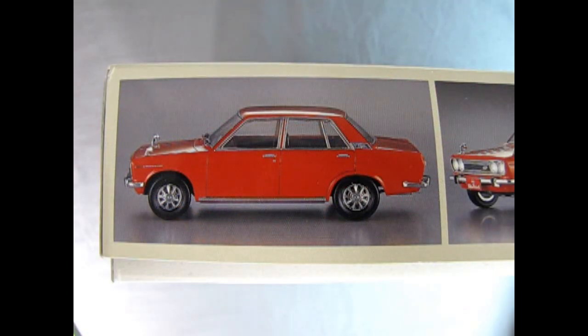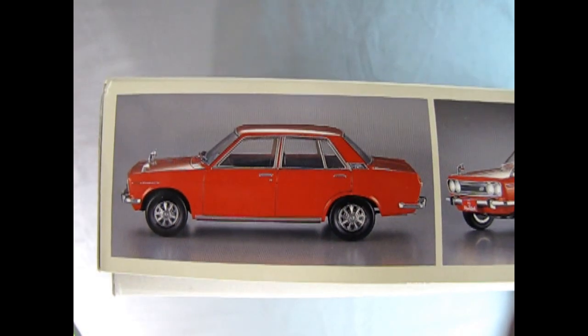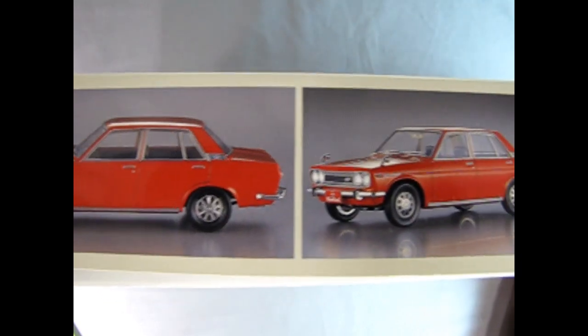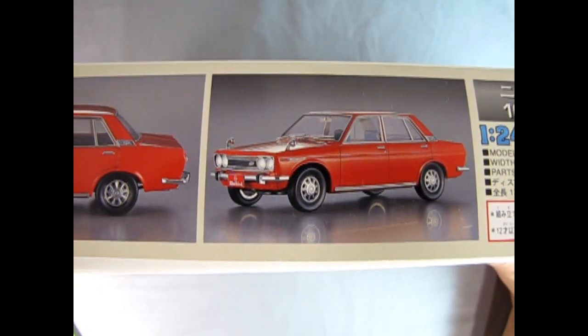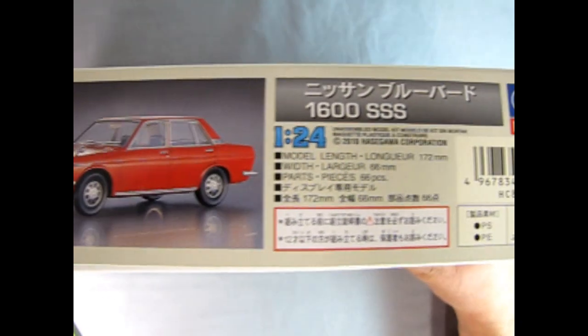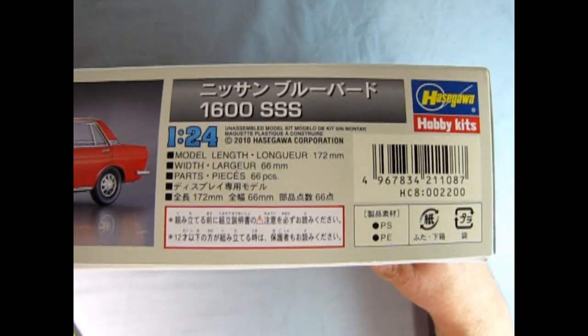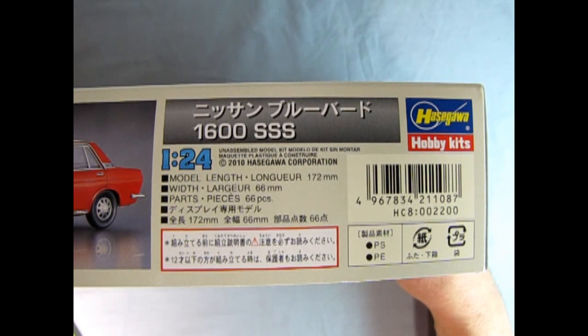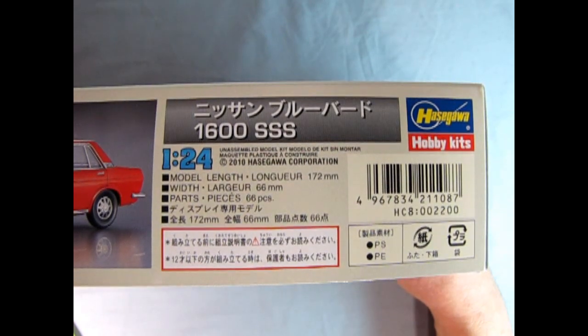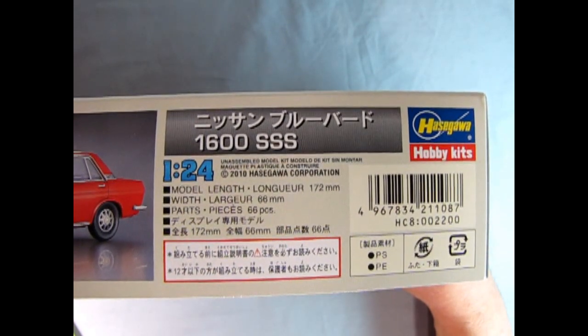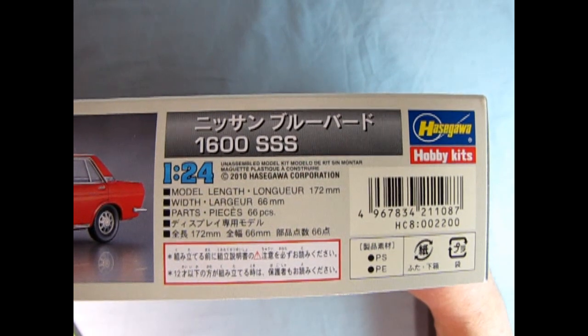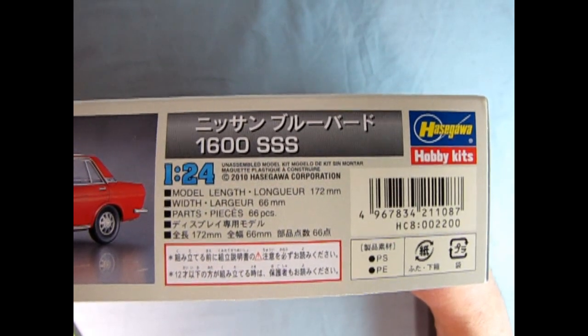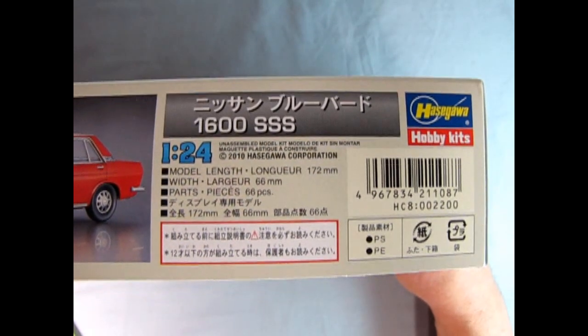As we look at this side of the box we can see the wonderful side view of our model car and here we have a three-quarter front view. Moving along we also have some details on the kit as in this is a 1:24 scale model kit. The length is 172 millimeters and the width is 66 millimeters. It has 66 pieces and some stuff in Japanese that I can't understand.